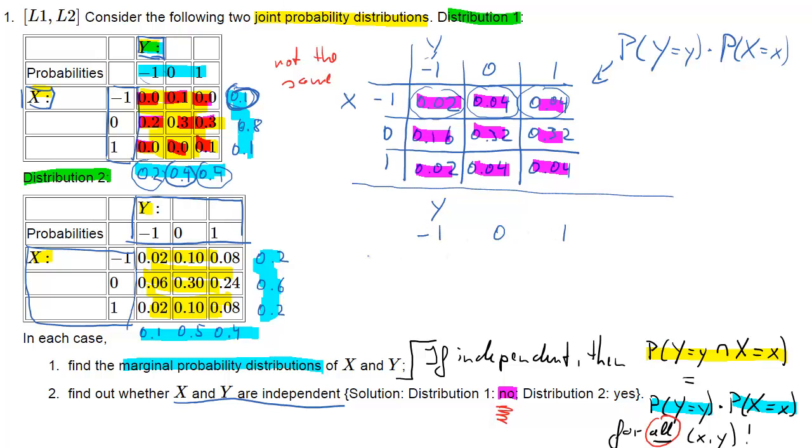We'll do the same exercise for distribution 2. So we'll again produce a table with the product of the respective marginal probabilities.